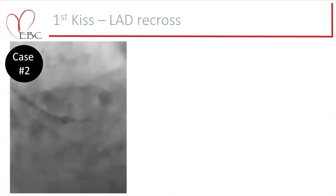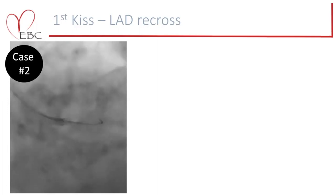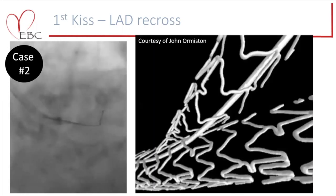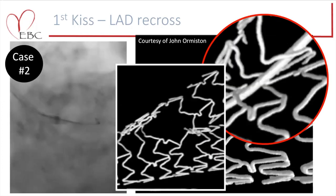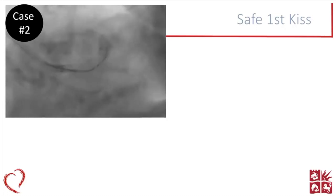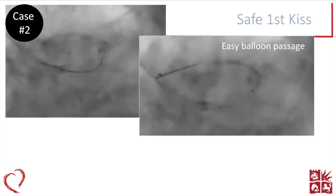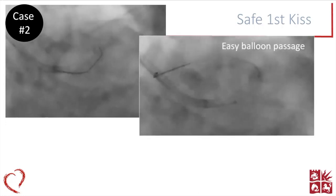Beyond that, we have to be mindful about wire recross. Back to case two — where I've crushed that 3.5 device across the LAD and now trying to rewire — we see it's very possible to wire through the back end of the stent, and as Jens Olsen has shown beautifully in a micro-CT example, we pass outside and then back into the stent lumen, potentially creating a scaffold gap. This can only be overcome through very careful wire manipulation, and I will often use a used balloon to check its passage to confirm I've truly passed into the stent appropriately. There is also an essential role for imaging in defining this.